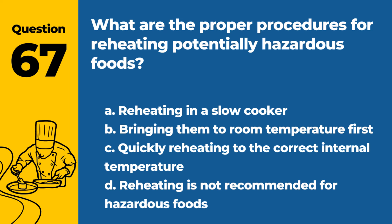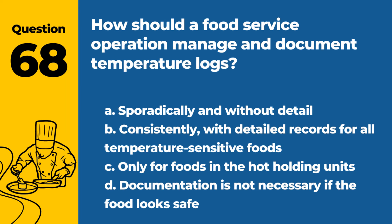Question 67. What are the proper procedures for reheating potentially hazardous foods? a. Reheating in a slow cooker. b. Bringing them to room temperature first. c. Quickly reheating to the correct internal temperature. d. Reheating is not recommended for hazardous foods. Answer: c. Quickly reheating to the correct internal temperature. This reduces the risk of bacterial growth.